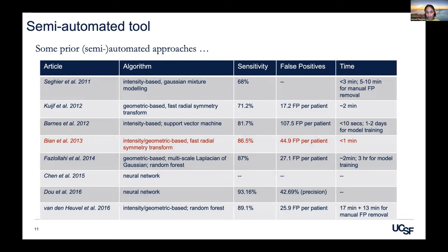There have been a handful of previous attempts to develop computer-based detection tools. Our original publication in 2013 of our computer-based algorithm is highlighted in red. There's a big trade-off between computation time, sensitivity, and false positive reduction. Some studies had good sensitivity with fewer false positives but very long computation times. Our original algorithm had sensitivity around 86.5% and about 45 false positives per patient, with fast computation time. Neural networks have much higher sensitivity but struggle with precision.